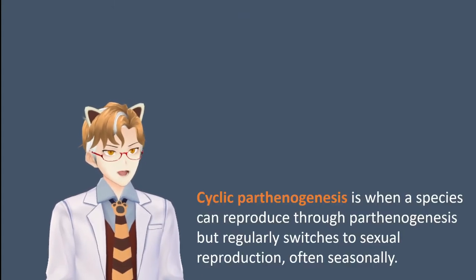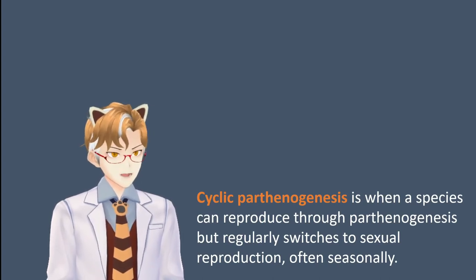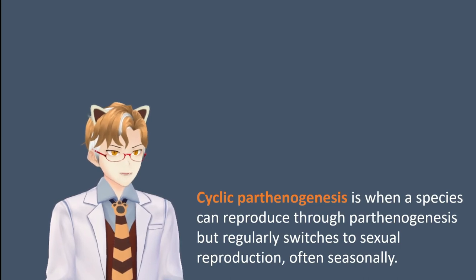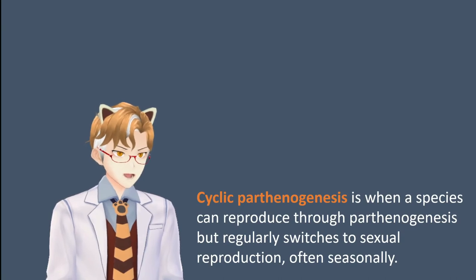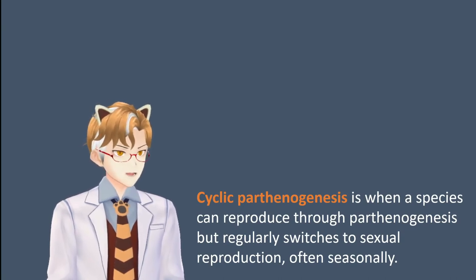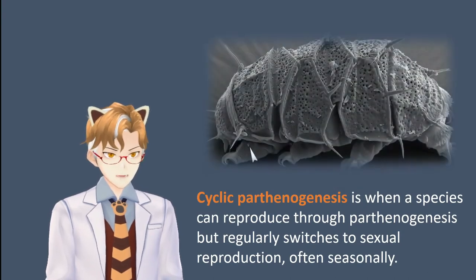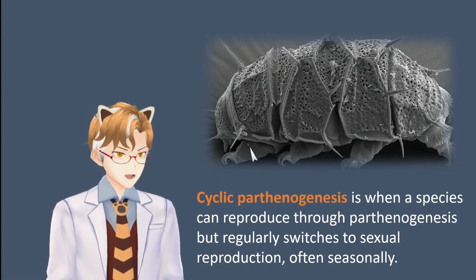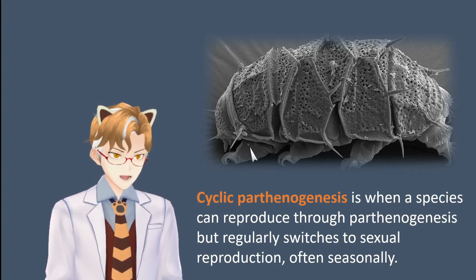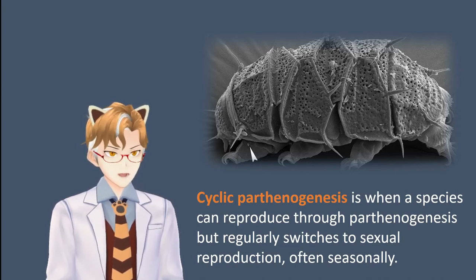One of the most interesting types of facultative parthenogenesis is usually referred to as cyclic parthenogenesis. Rather than being some spontaneous and rare occurrence, it is simply part of the life cycle of an organism, usually driven by some seasonal pattern or environmental cue. Some species of water bears are like this — they can reproduce normally sexually, but under certain circumstances they will reproduce asexually.